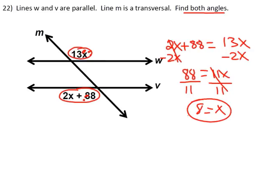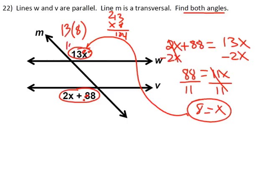If x equals 8, now we have to just substitute back in. So 13 times 8, just go over to the side, is 104 degrees. And that looks good, because it's supposed to be greater than 90. So it's an obtuse angle. So let's see if this one comes to that same number.